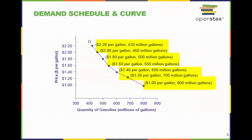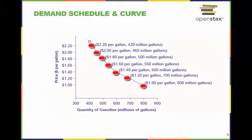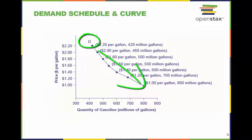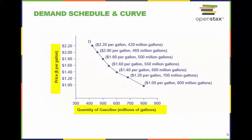The demand schedule shows that as a price rises, quantity demanded decreases, and vice versa. These points are then graphed and the line connecting them is the demand curve D. The downward slope of the demand curve illustrates the law of demand — the inverse relationship between prices and quantity demanded.